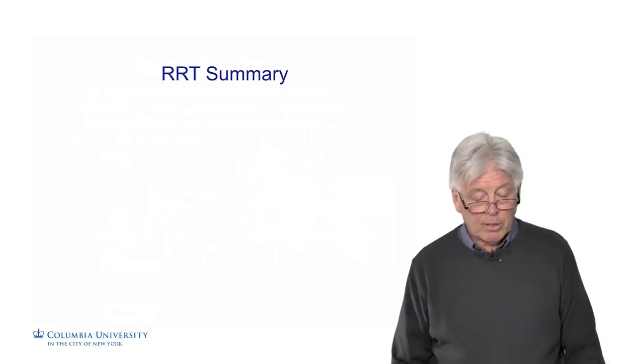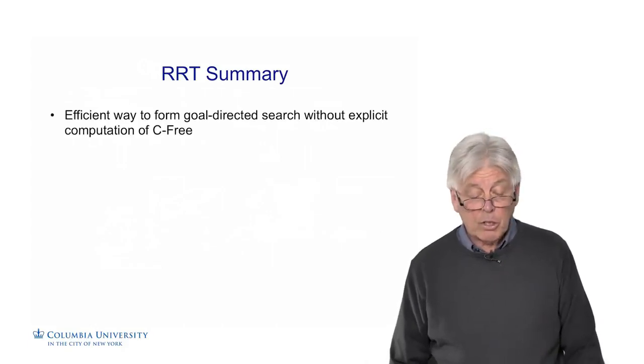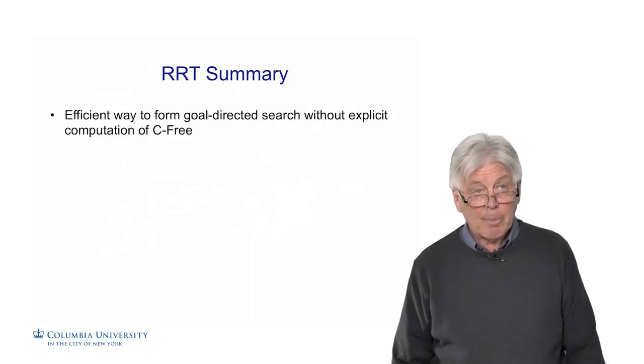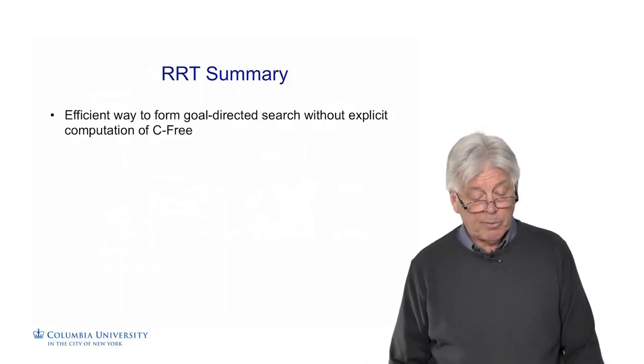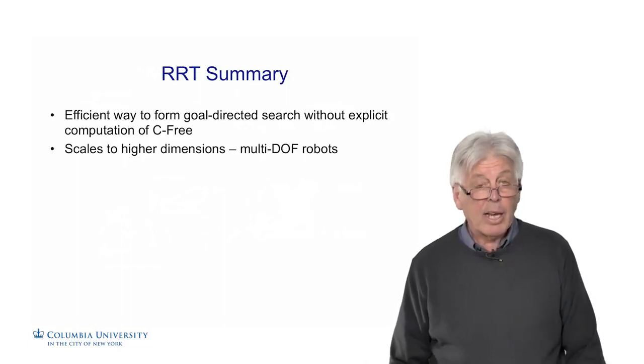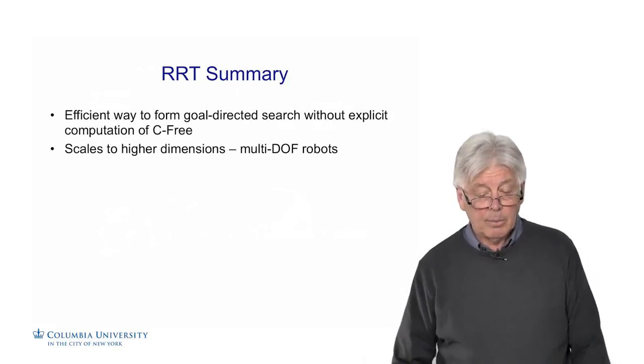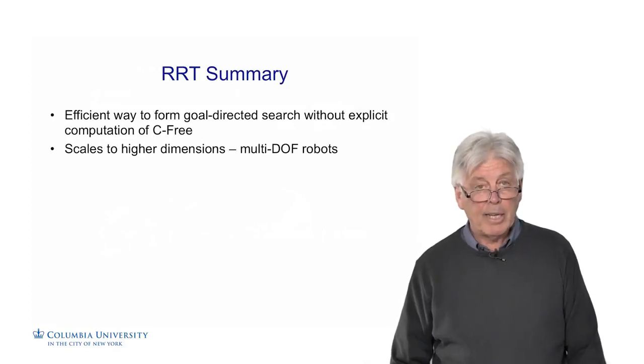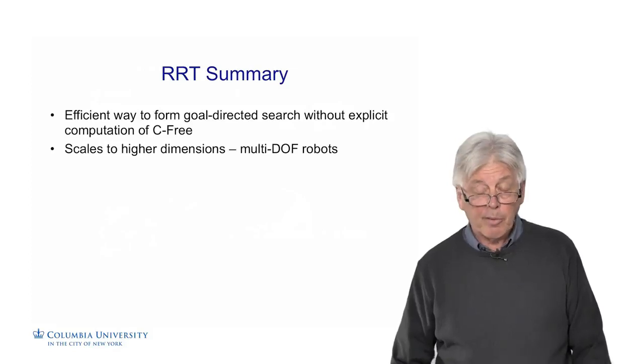Let's summarize our RRTs. They're an efficient way to form goal-directed search without explicit computation of the free space. We're just sampling the C space, and we can find configurations that are free, but we don't know all the configurations. It scales nicely to higher dimensions, which are difficult to do exactly. We can use approximations here by doing sampling of this high-dimensional space and find regions which we can navigate in. It's good for multi-degree freedom robots.